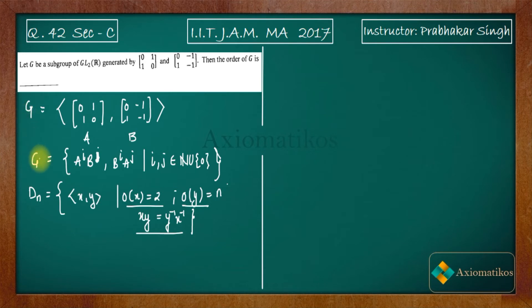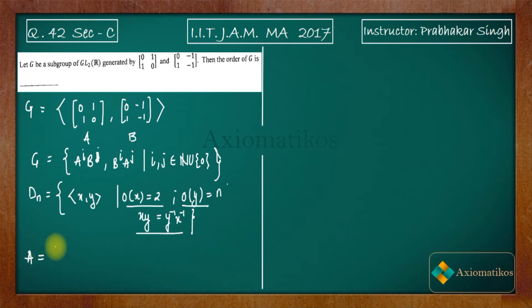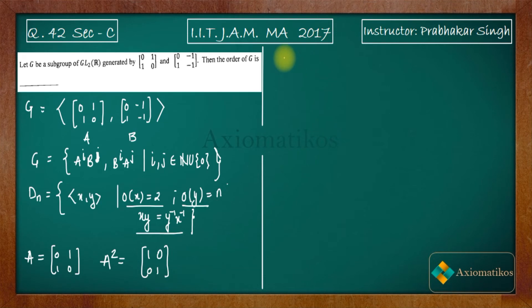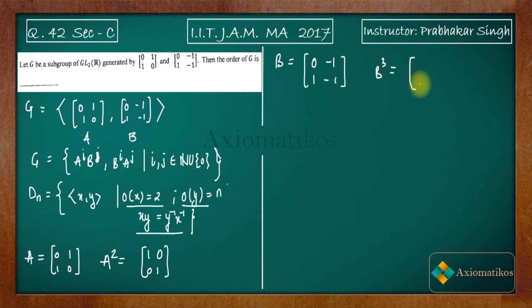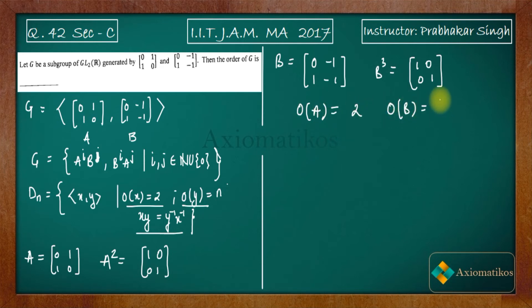We have a similar kind of group generated by two elements, so we calculate the order of A and B. Order of A means the least n such that A^n equals the identity. For A = [[0,1],[1,0]], squaring it gives the identity, so the order of A is 2. For B = [[0,-1],[1,-1]], multiplying it three times gives the identity, so the order of B is 3.